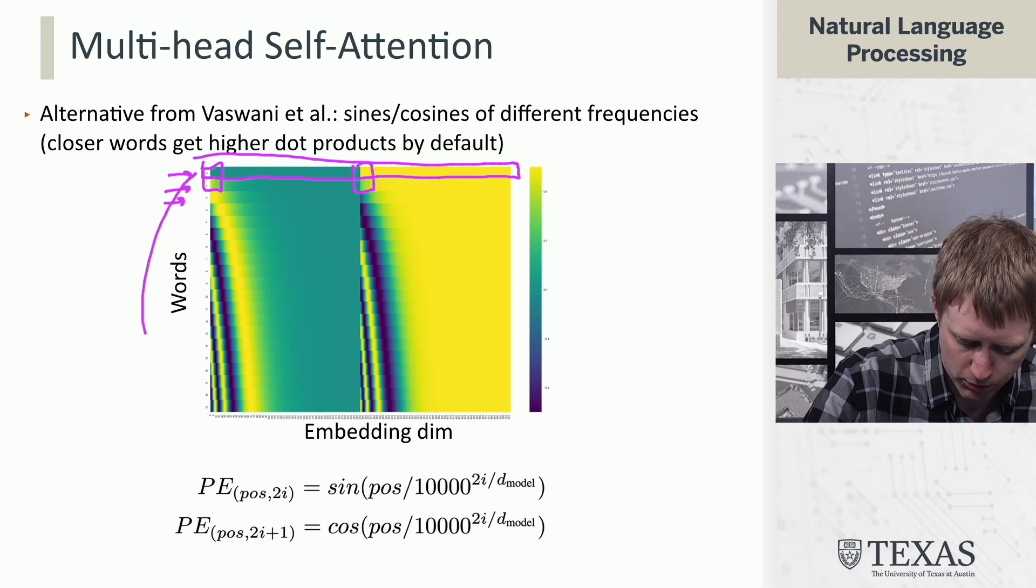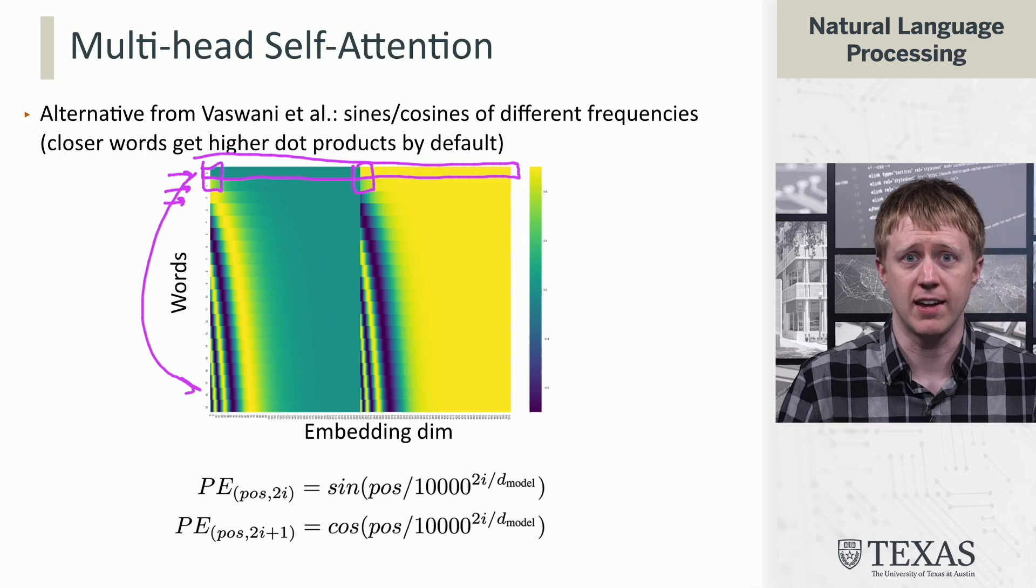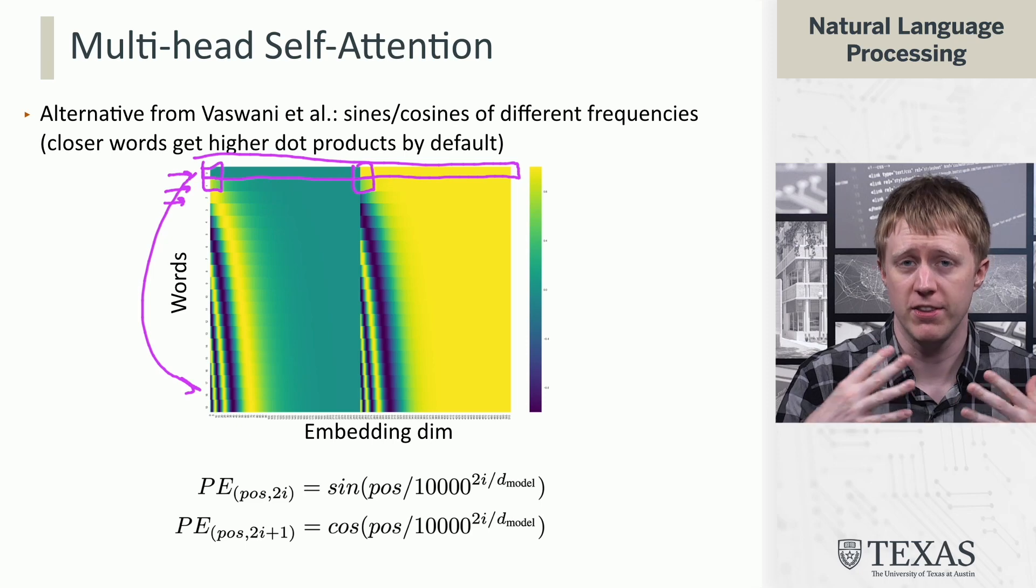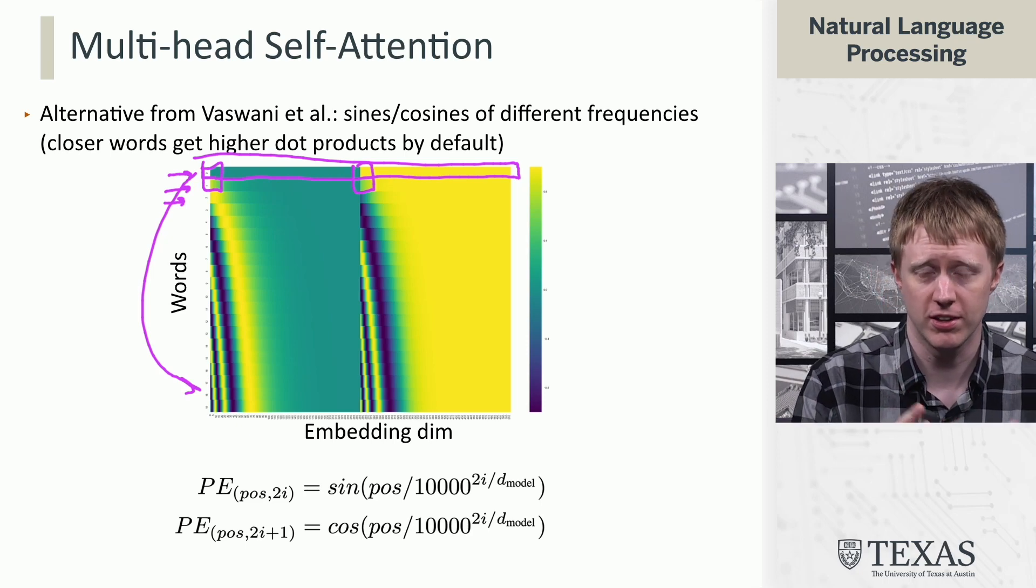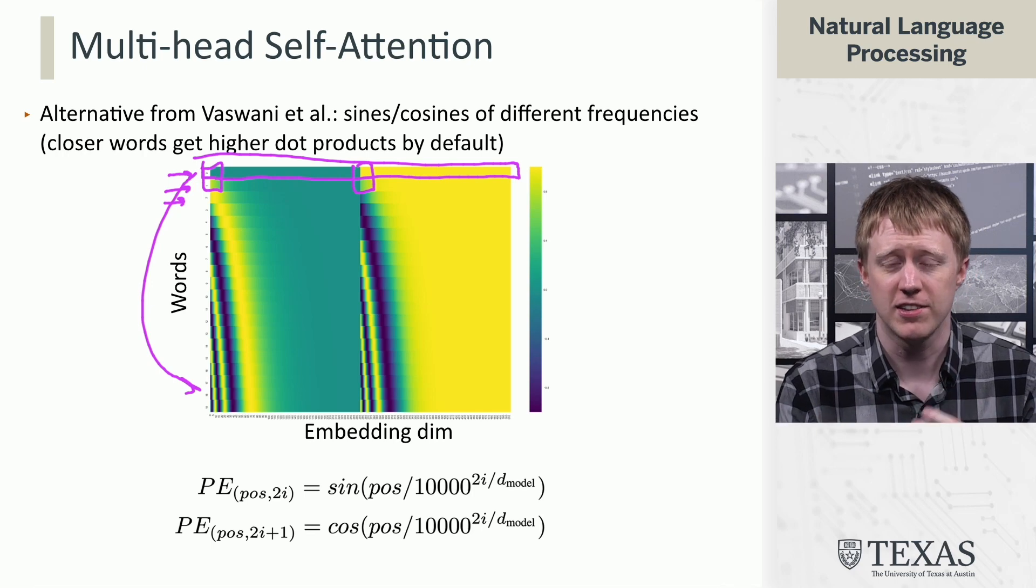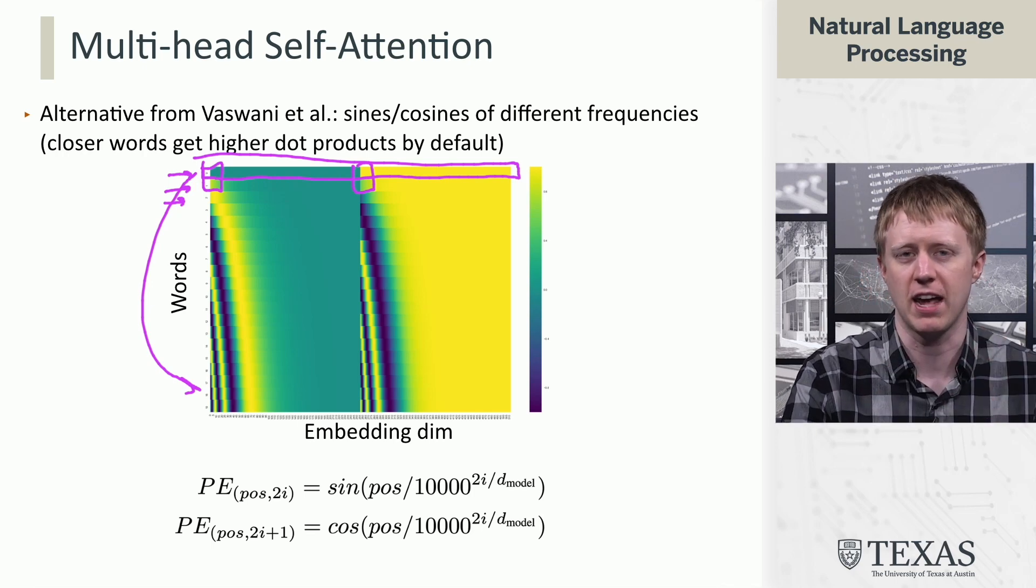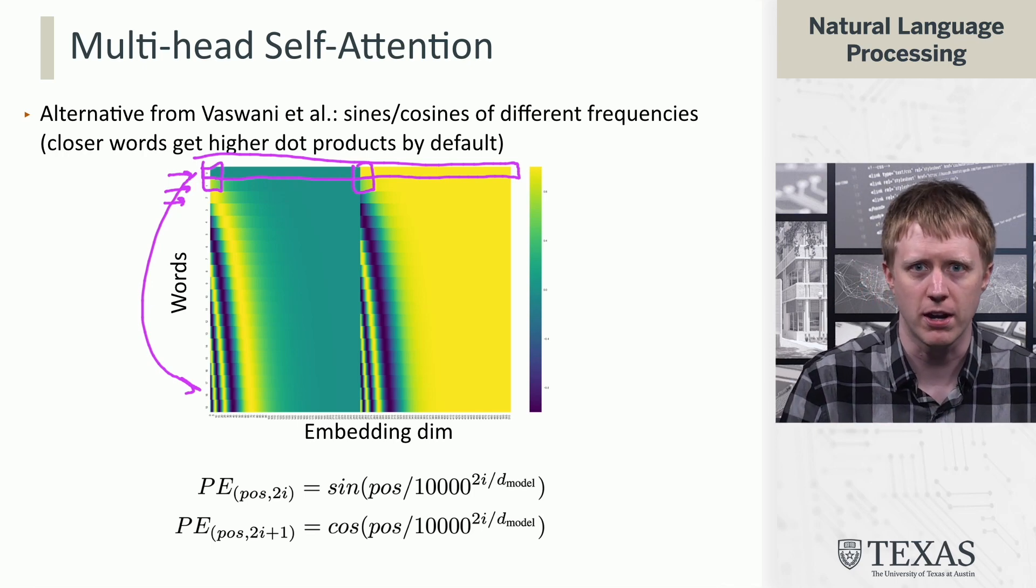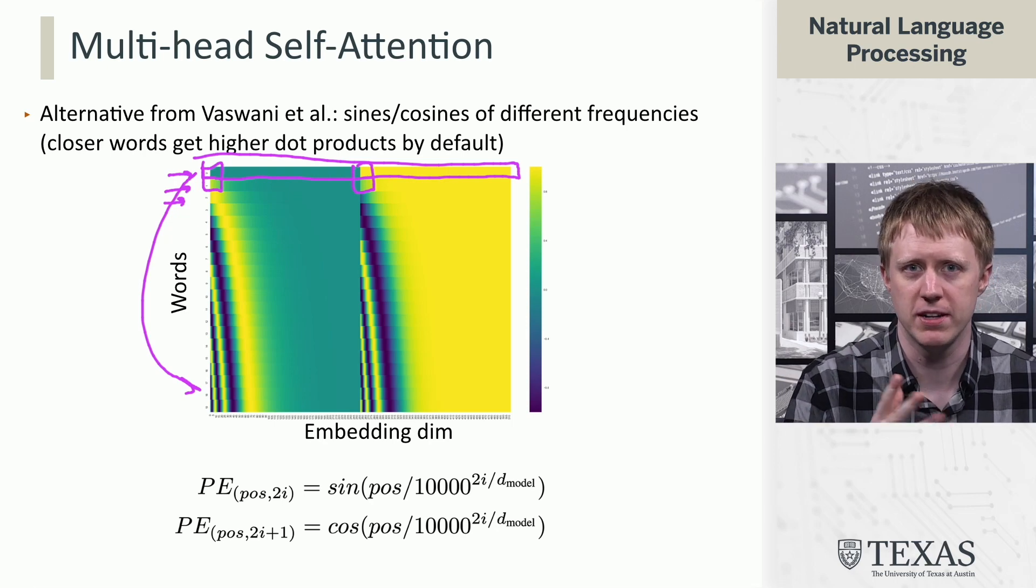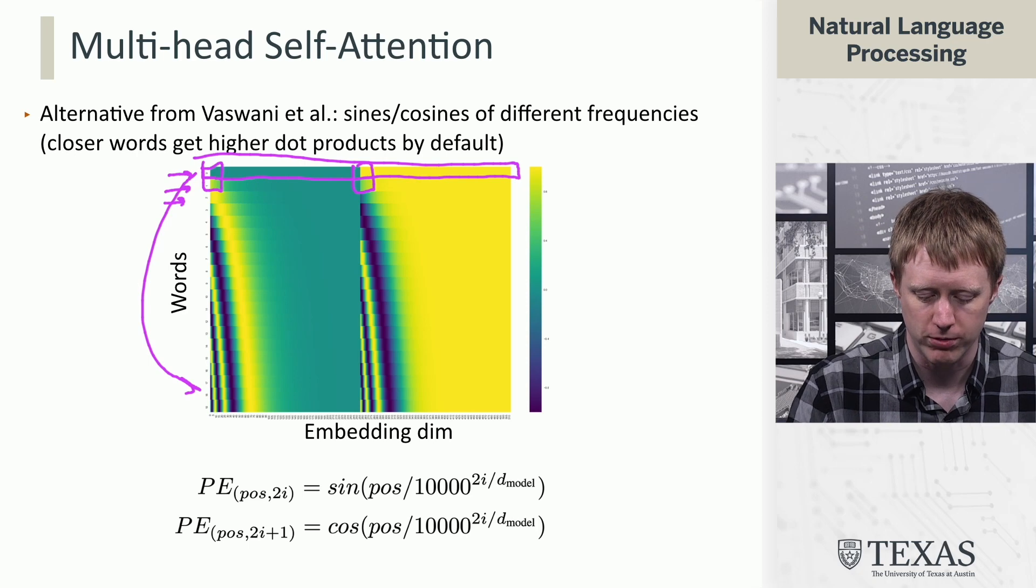But when you compare word one and word 20, let's say, you can see that the vectors actually look pretty different. And so the dot product representations, the dot products of these representations are going to reflect the fact that some of these words are closer together and then probably should get a higher dot product. All right. So that's another way to do it. It's been a little bit set aside in the literature more recently.